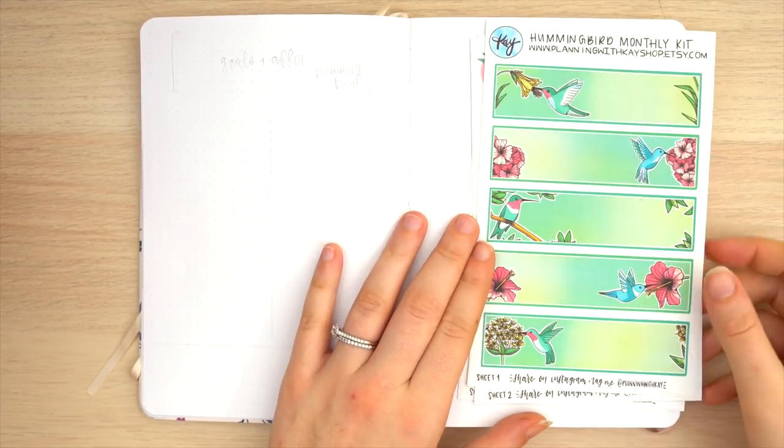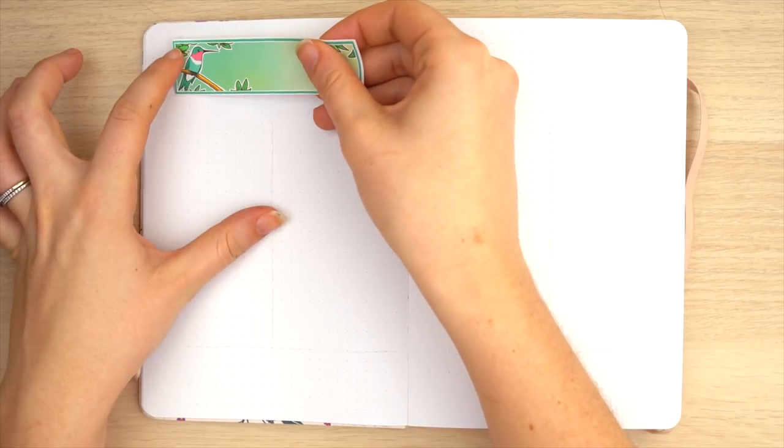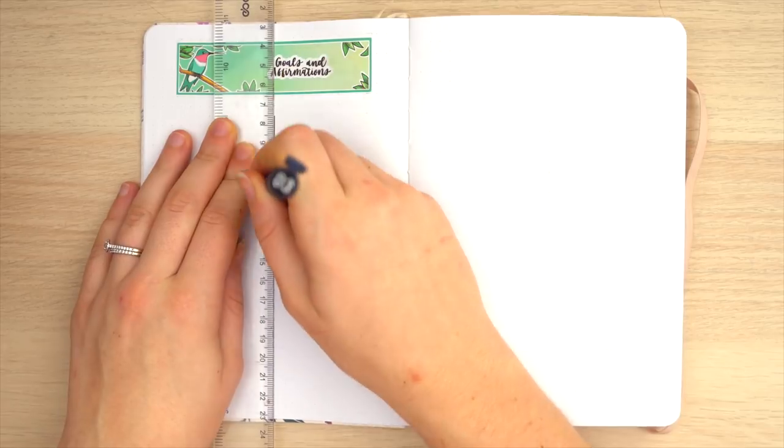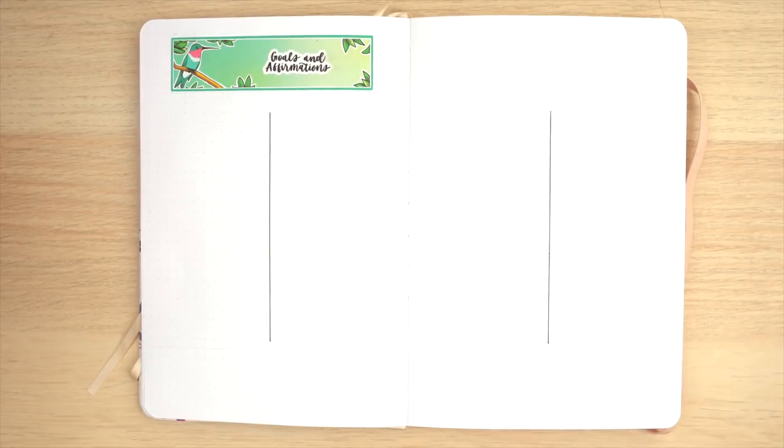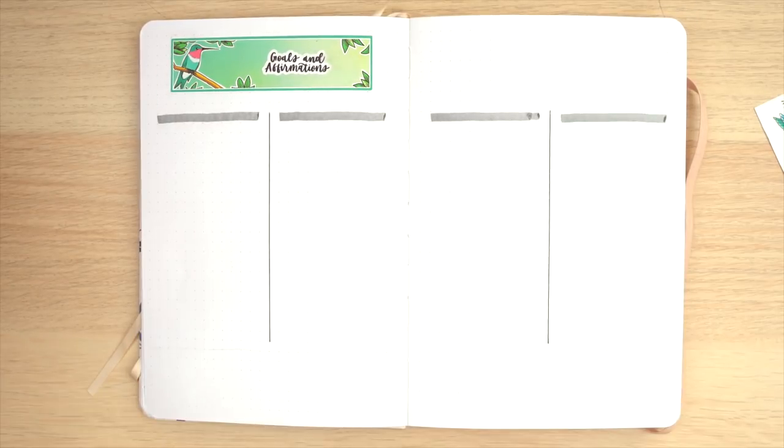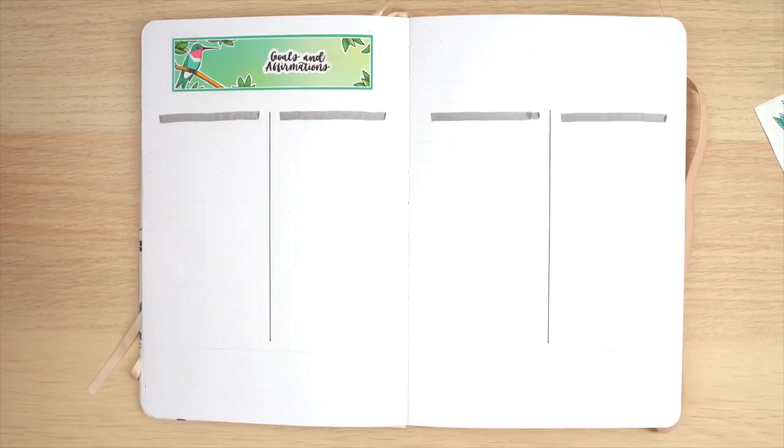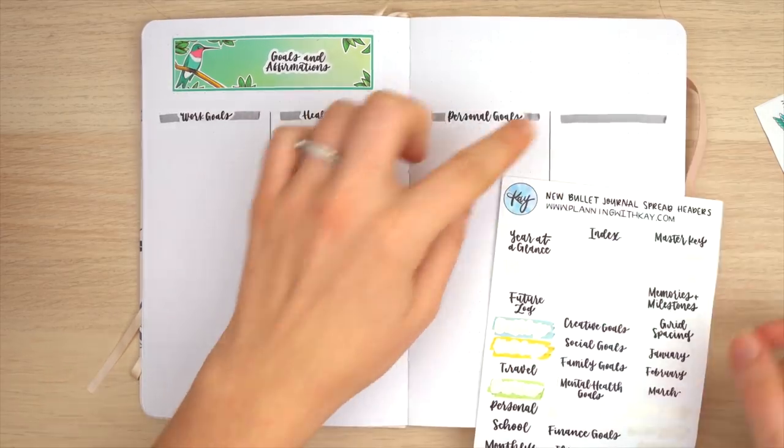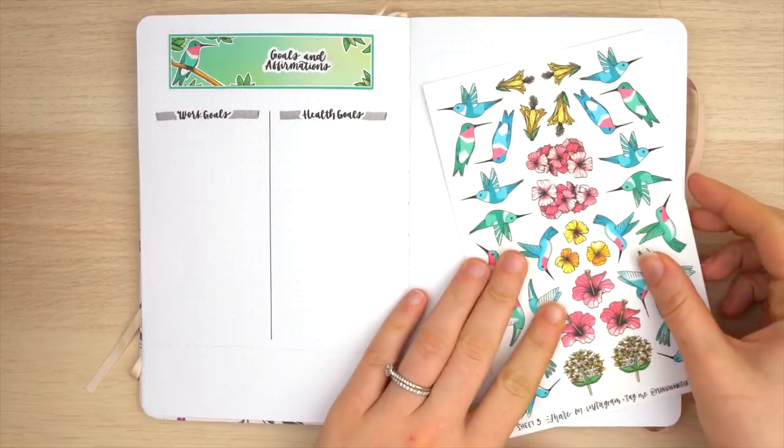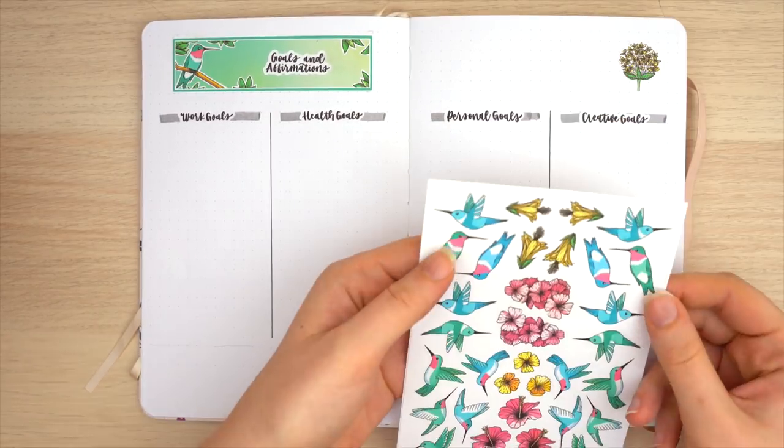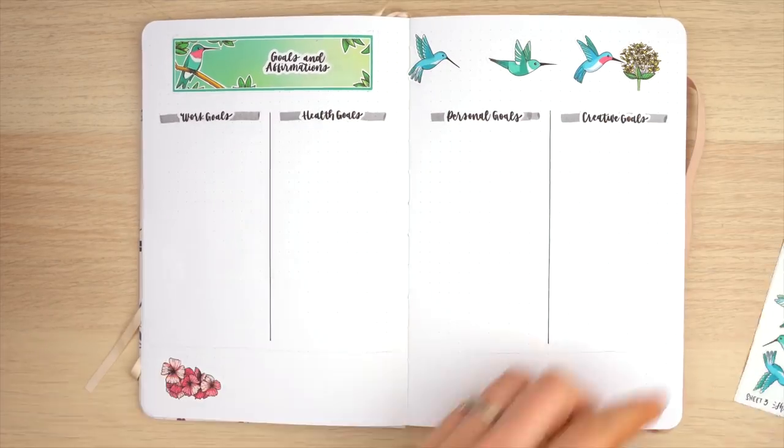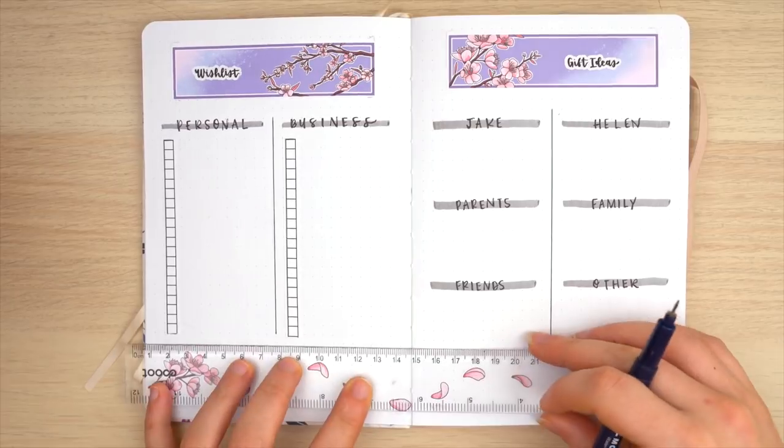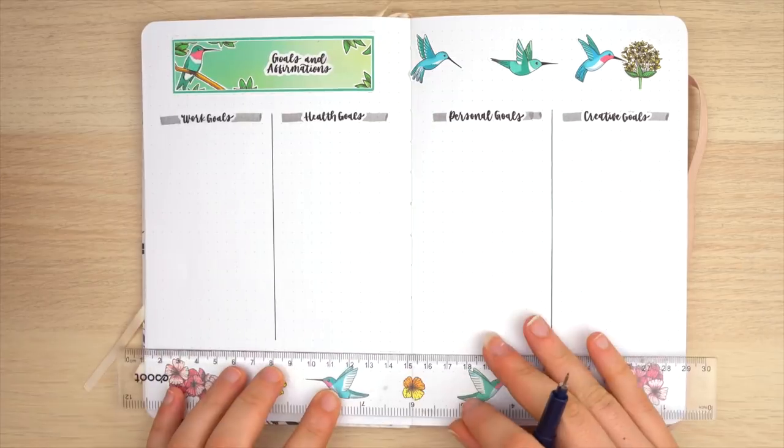I'm now moving on to my goals and affirmations spread. I love to do a goal spread at the start of every single bullet journal - it's just a great reason to take a little extra time to sit down and think about what I want to achieve throughout the time that it takes me to finish this bullet journal. I'm creating a very simple goals and affirmation spread here, switching over to my third spring theme with this hummingbird theme. I'm absolutely obsessed with these colorful springtime themes. All the headers here are also from that bujo migration headers sheet that I was mentioning, and I just created four different sections for my goals: work, health, personal, and creative.